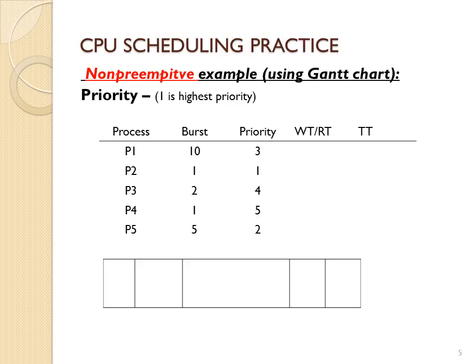You can see the priority column, so let's get started. We start at time zero and we're going to pick the one that has the highest priority, which is P2. It will go for one time unit and, since this is a non-preemptive version, it will finish its CPU burst and be done. Now the current time is one and we will pick the one that has the next highest priority, which is P5. It will go until time six and complete its CPU burst.